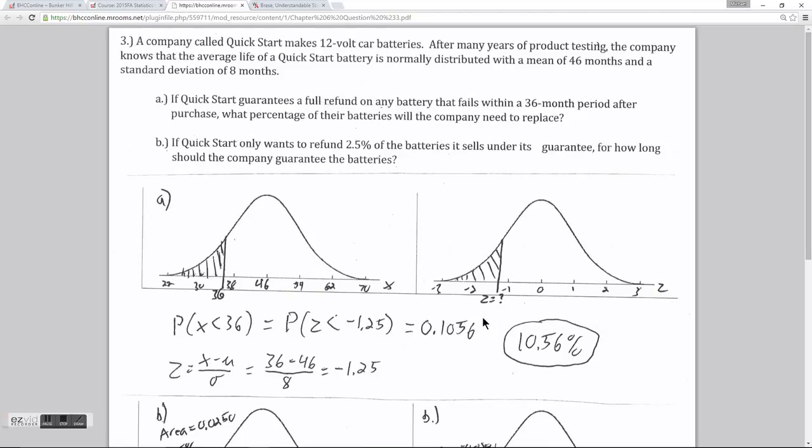So the question now becomes, in any normal distribution, what is the chance that a value will be 1.25 standard deviations below the mean, or lower? Well, this is a value I can look up on my normal table. My table lists areas to the left of z values, and that's what I'm looking for in this question.